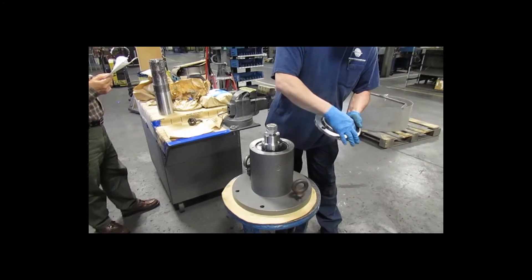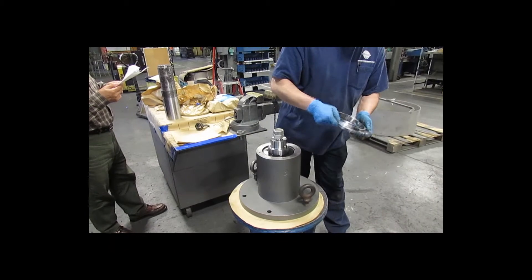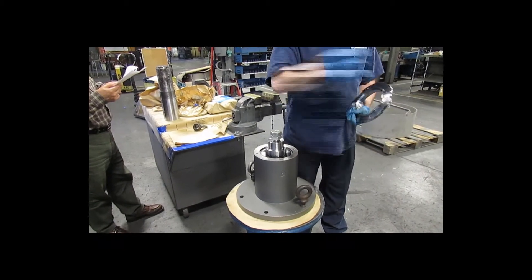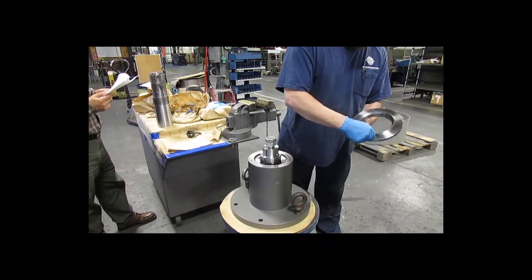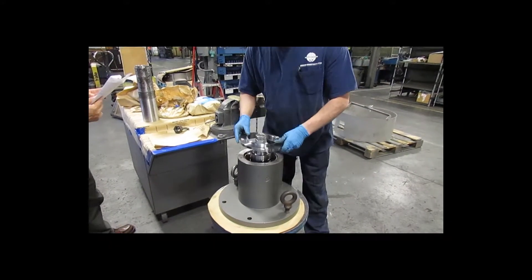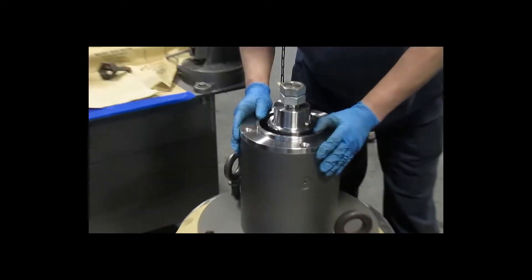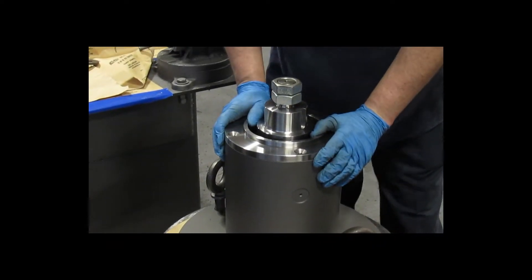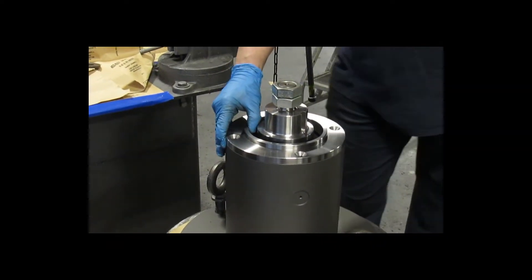The upper rotor end cover would be the next part to be installed. It has four holes that are countersunk on one side. It can only be installed in one manner. There's a shoulder on the inside which seats against the outer race of the upper rotor bearing.